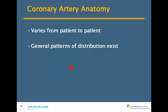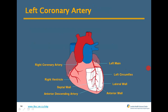Coronary artery anatomy varies from patient to patient, but there are general patterns of distribution. The left coronary artery covers the septal wall and the entire left anterior face. It includes the left coronary main, the left circumflex, which takes care of the left lateral wall, and the anterior. On the right side, the right coronary artery takes care of the entire right ventricle.